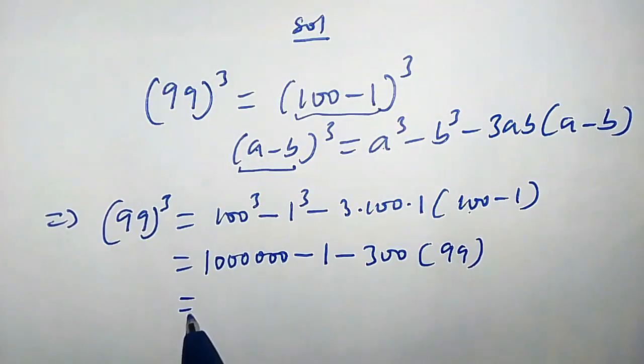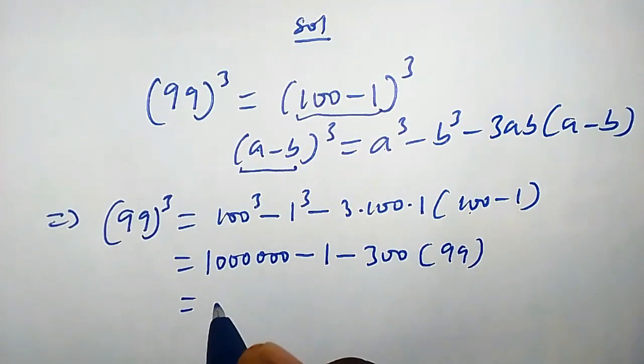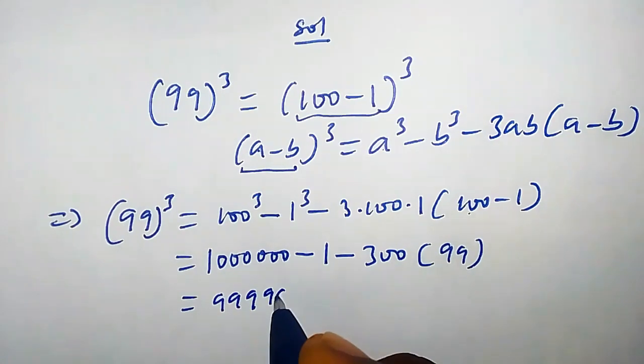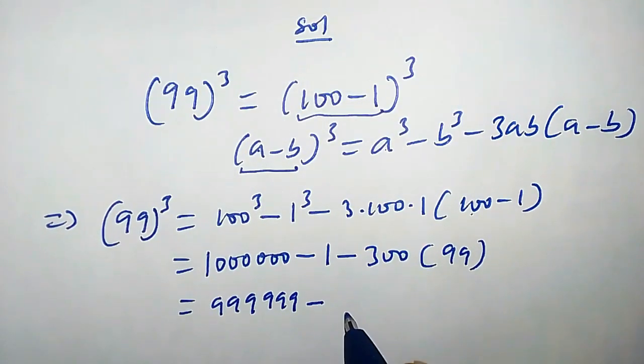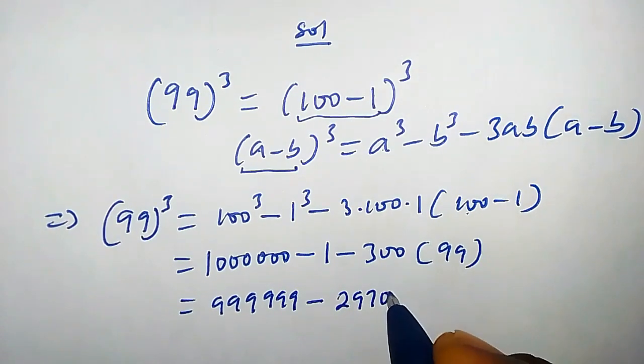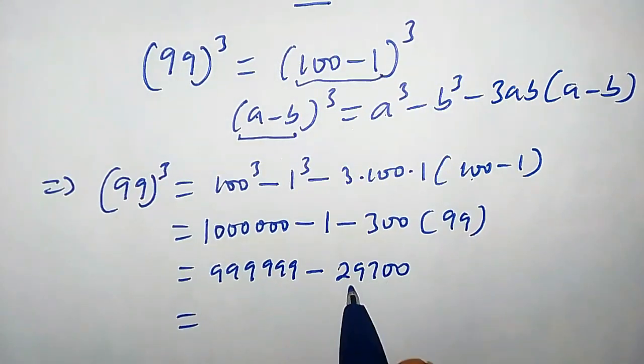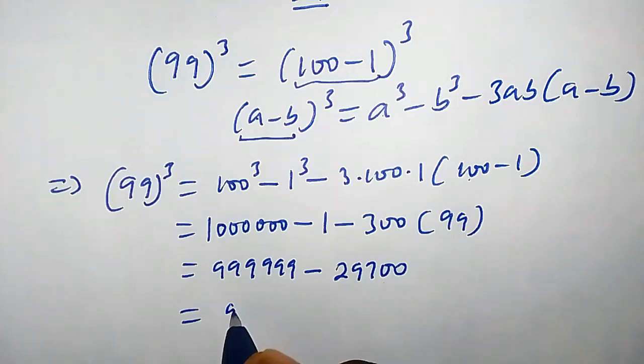This equals—let's subtract these two—so we're going to have 999,999 minus 300 × 99, that is 29,700. This equals—let's subtract this from this—so we're going to have 970,299.